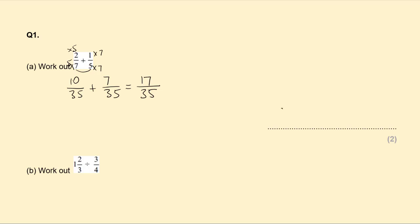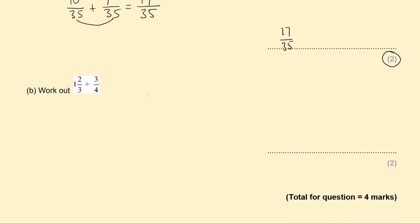The answer is 17 over 35, worth two marks. You get one mark for writing the correct common denominator with a correct numerator, and two marks for the right final answer. Question b.